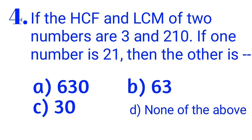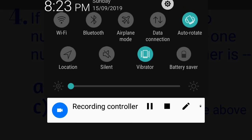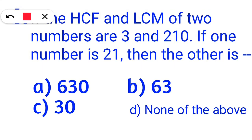If the HCF and LCM of two numbers are 3N, and one number is 21, then the other one is — the correct answer is provided.